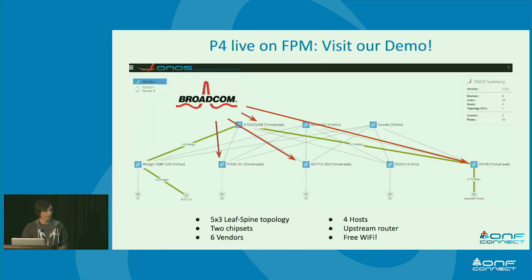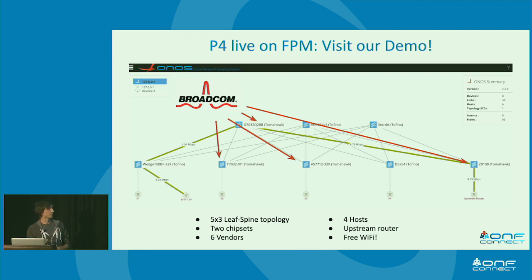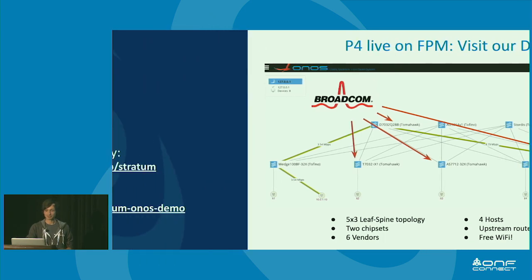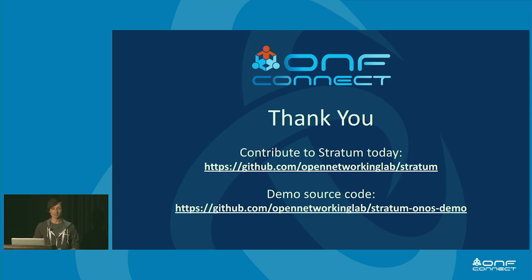One last thing: if you want to see this all in action, come to our demo where we have a leaf-spine topology — I think three by five — with two chipsets and devices from six vendors. There are four hosts that can generate traffic across the topology, with an upstream router. If you talk to one of the presenters you might get Wi-Fi access and can see your traffic going through this leaf-spine topology into the internet. It's pretty fascinating. With that, I'm done — thank you for your time.